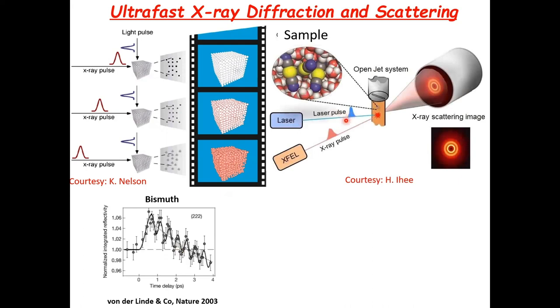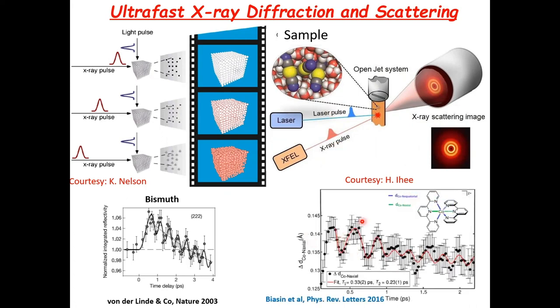Then you can also do solution X-ray scattering. In the same pump probe configuration, you excite a flowing liquid jet with a laser pulse and probe it with an X-ray pulse. You will get ring patterns which contain information about the solute and solvent. This is an example in the case of a cobalt complex, where you see intramolecular oscillations. This was work done at the free electron laser in Stanford.